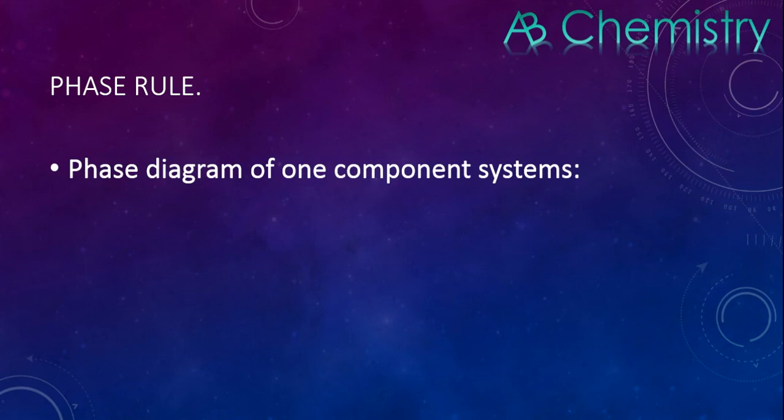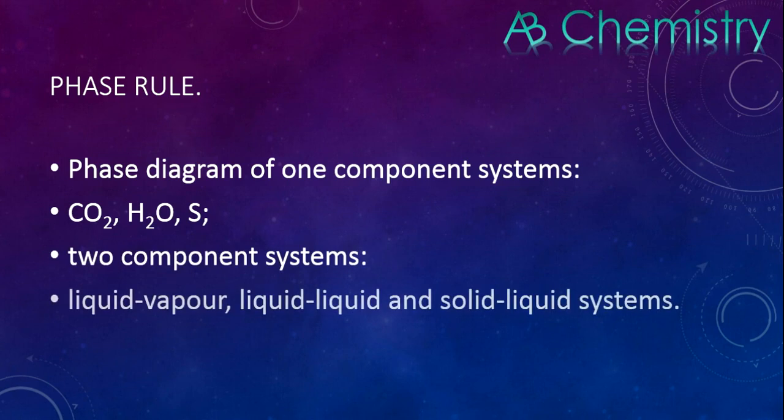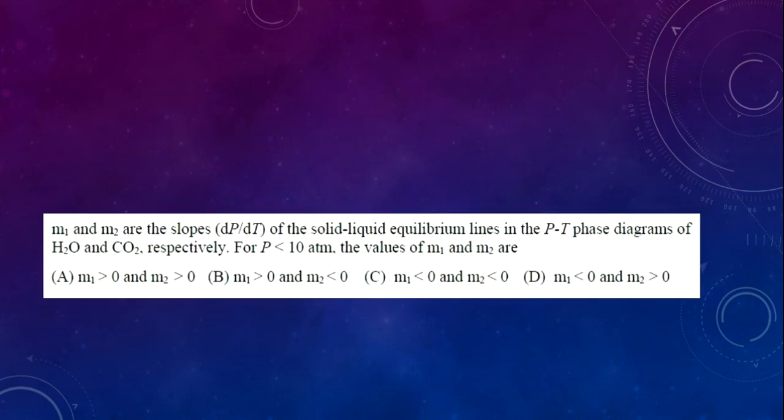In phase rule, the phase diagrams of one-component systems—they mainly focus on carbon dioxide, H₂O, and sulfur. Also two-component systems: liquid-vapor, liquid-liquid, and solid-liquid systems. You have to know about azeotropes and eutectics. Previously they only asked about phase diagrams.